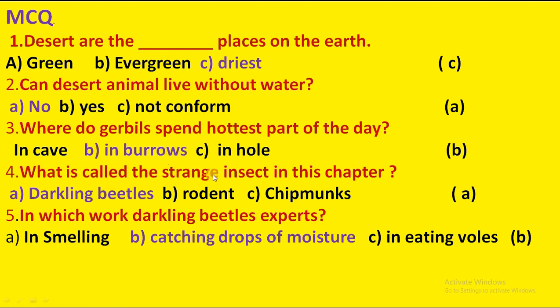What is called the strange insect in this chapter? Options: darkling beetles, rodent, chipmunks. Option A is correct: darkling beetles.